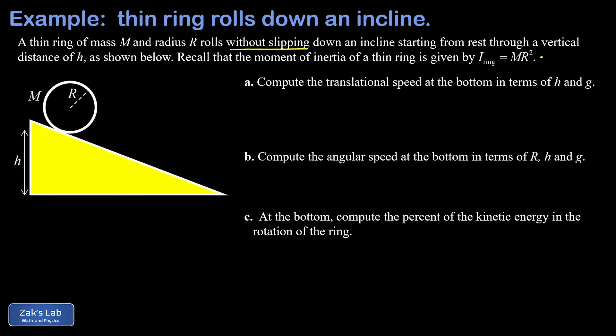In part a we want to get the translational speed at the bottom in terms of h and g. What's going on here is an energy transfer between the gravitational potential energy of the ring, that would be mgh if we use the bottom as the reference point, and the kinetic energy of the ring at the bottom.